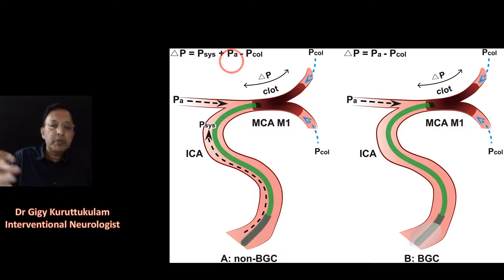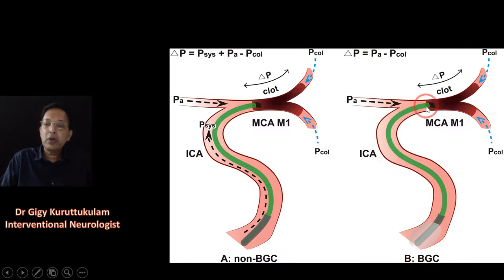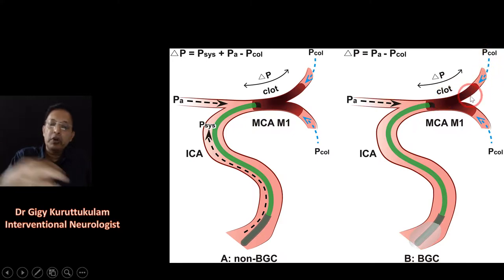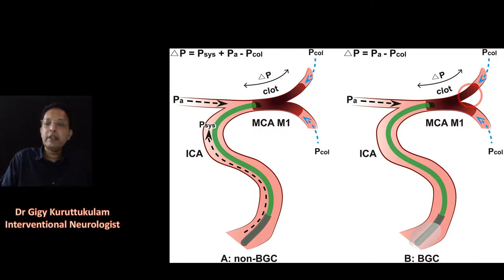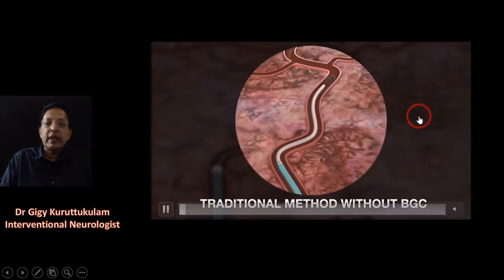When you use a balloon guide catheter, you are actually cutting off the systemic pressure. So the pressure acting to push the clot away becomes much less, while the collateral pressure pushing the clot back toward the catheter remains. This creates a favorable pressure environment for clot retrieval.